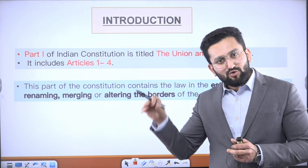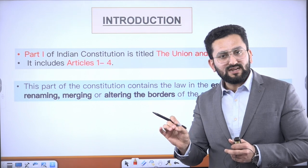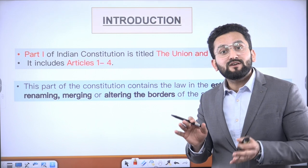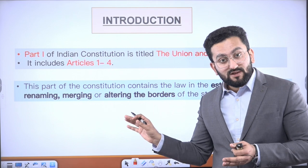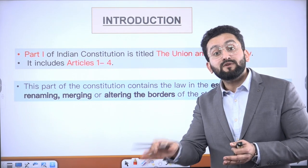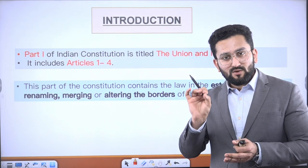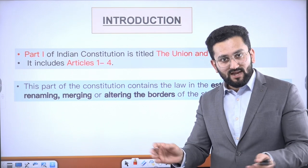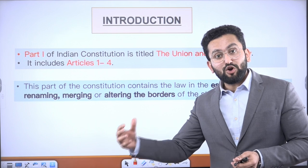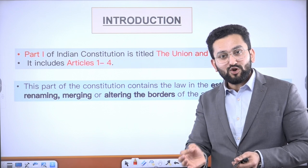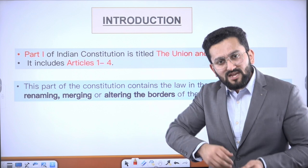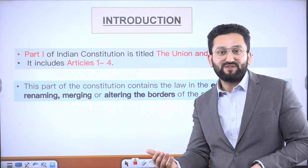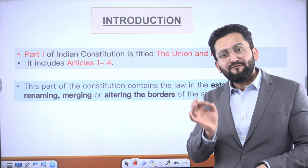Apart from this broad framework of Article 1, Articles 2 and 3 talk about the establishment of new states, altering the boundary of existing states, or renaming them. Article 4 mentions the process you need to follow to achieve these objectives. So Article 1 talks about name, territory, and broad administrative structure. Article 2 talks about establishment of new states from outside. Article 3 talks about changing the boundary or name of states already inside Indian territory. And Article 4 talks about how to actually achieve that — the process you need to follow. This is the broad framework of Part 1 of the Indian Constitution.